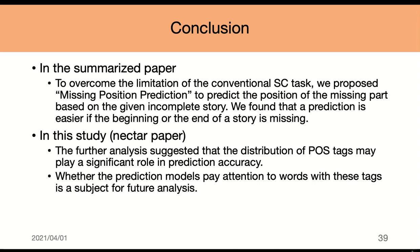Conclusion: we found that prediction is easier if the beginning or the ending of a story is missing. The further analysis suggested that the distribution of part-of-speech tagging may play a significant role in prediction accuracy. Whether the prediction models pay attention to words with these tags is the subject for future analysis.